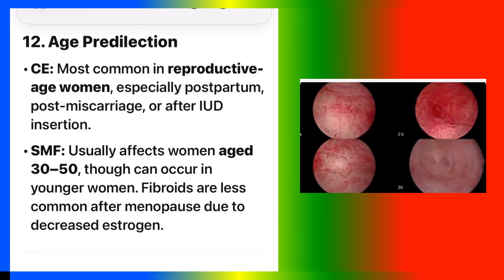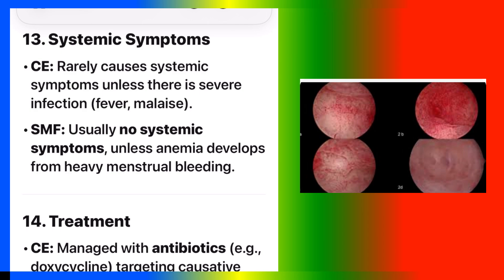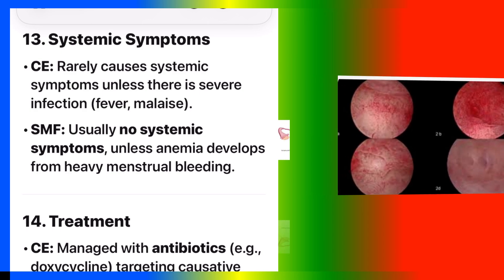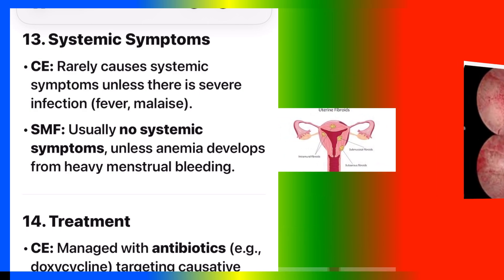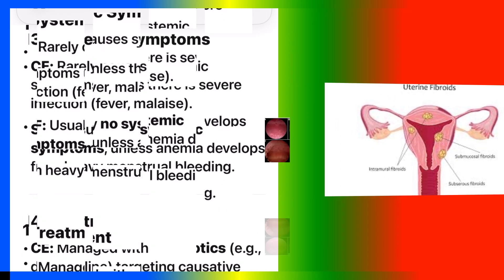Number thirteen: systemic symptoms. CE rarely causes systemic symptoms unless there is severe infection — fever and malaise. SMF usually causes no systemic symptoms unless anemia develops from heavy menstrual bleeding.